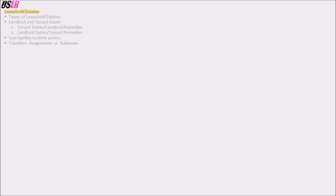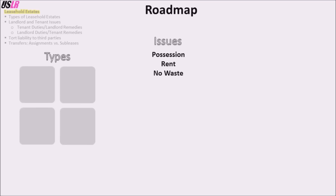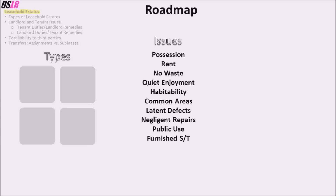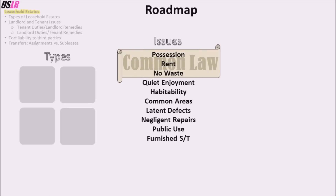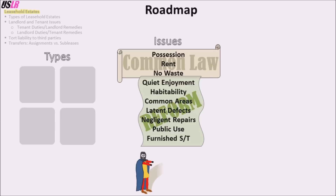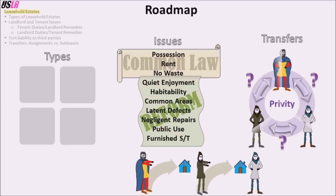As a road map, consider the following: there are four kinds of leasehold estates and ten issues between the landlord and the tenant. You will probably remember them in three sets. The first three are the originals from the common law; the following are from the reform of the law. Of the reform issues, quiet enjoyment and habitability are the most popular, and the final five are a miscellaneous bunch.